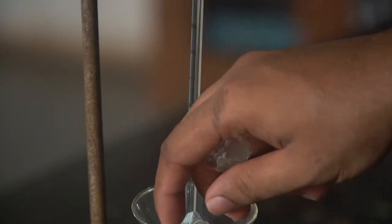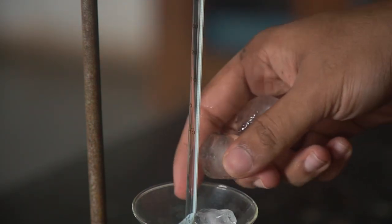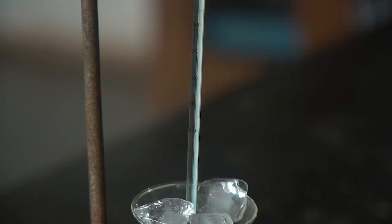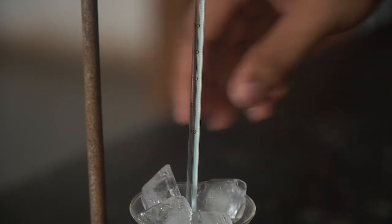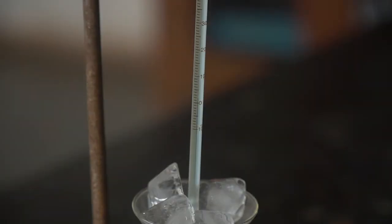Now we will place the thermometer in the funnel and make sure that the thermometer is within the funnel's cone. Then we will slowly add ice cubes into the funnel.